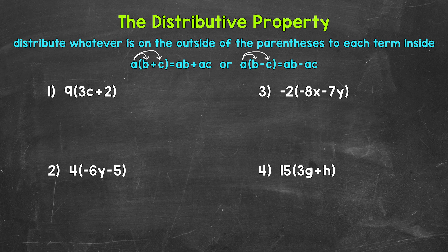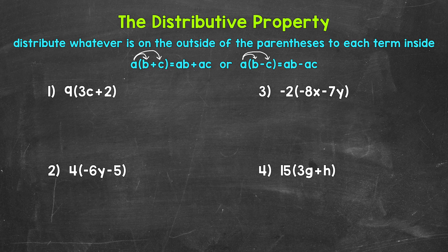In this video, we will just work on removing the parentheses. There won't be any like terms to combine. Once we get the distributive property down, we can build on that and simplify more complicated expressions that involve the distributive property and combining like terms. Remember, when we have something next to parentheses, that means multiplication. So we can use the distributive property to distribute whatever is on the outside of the parentheses to the terms inside the parentheses. The distributive property works when we have addition or subtraction inside of the parentheses.